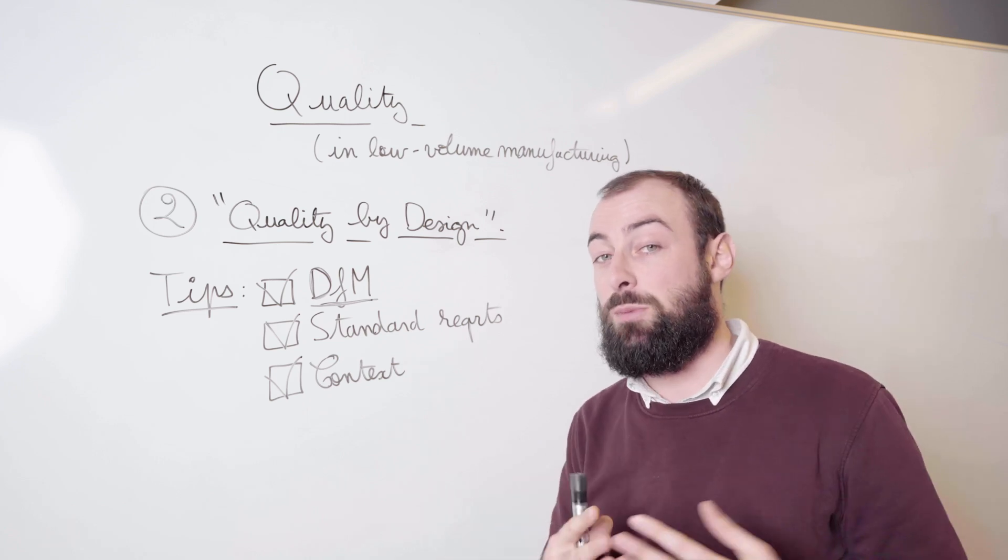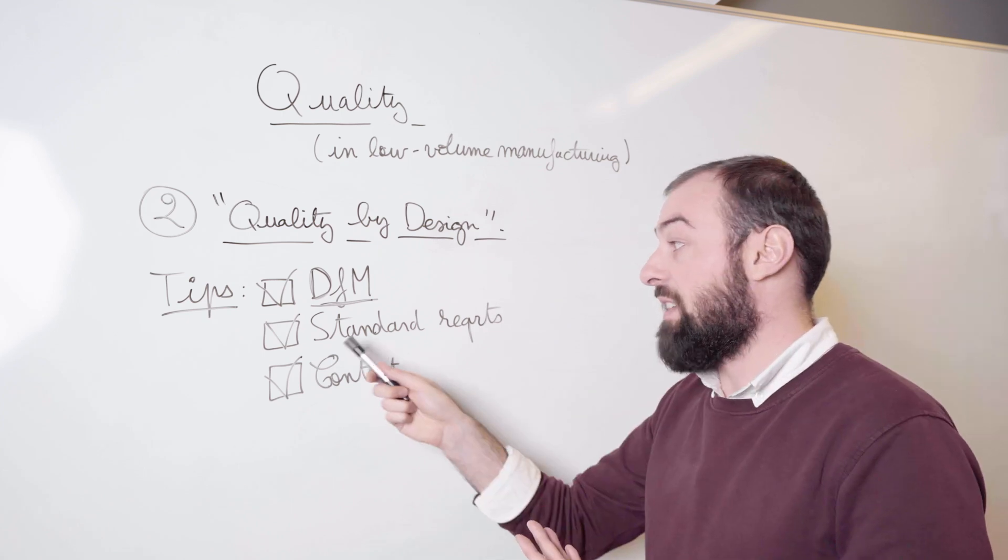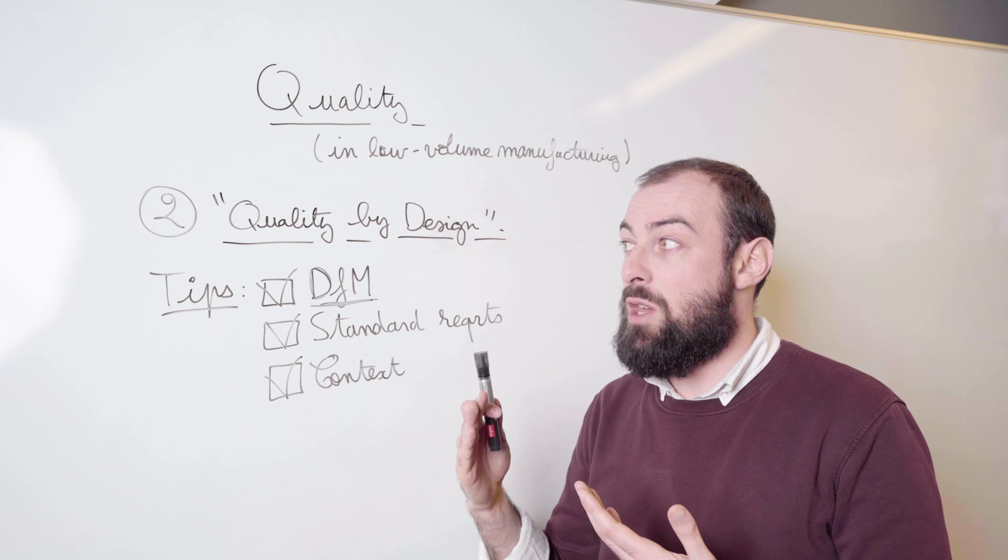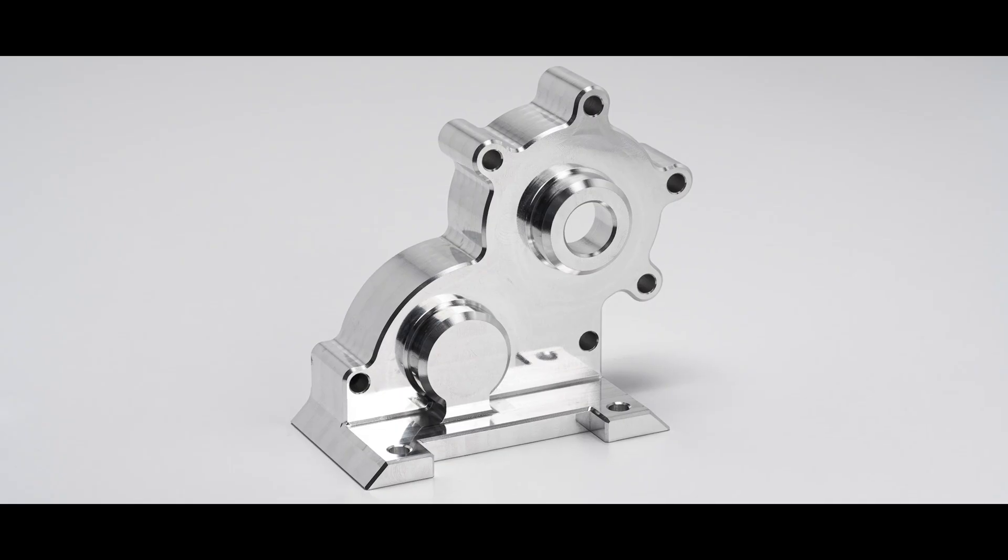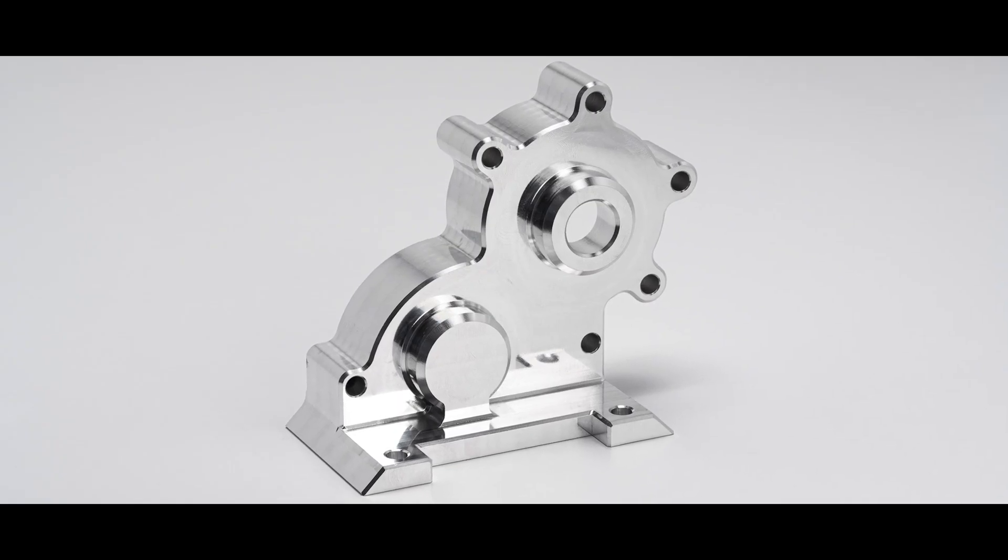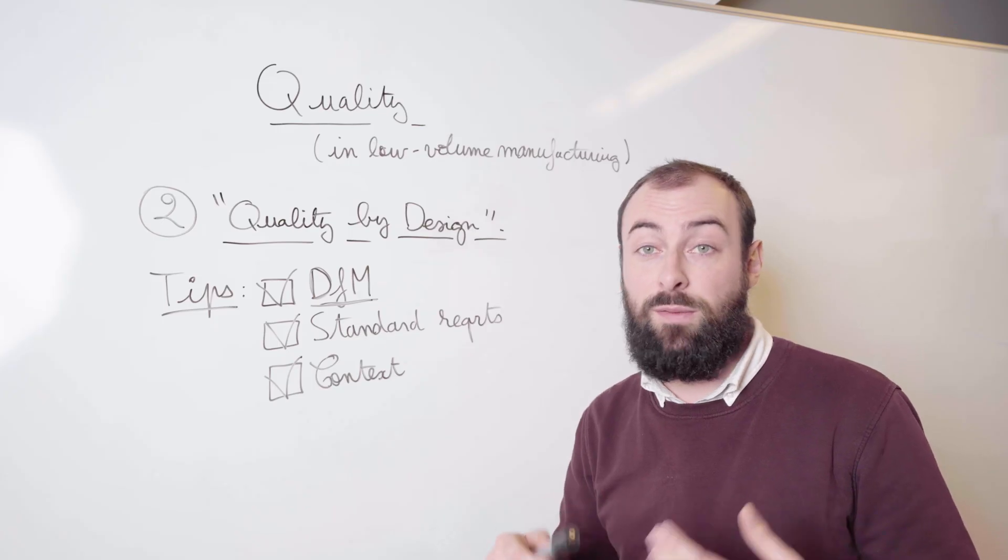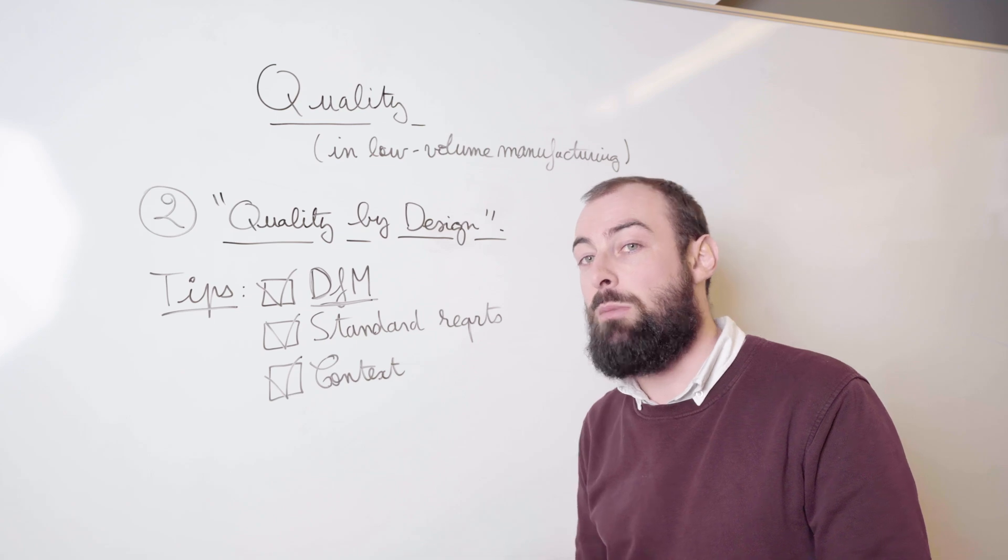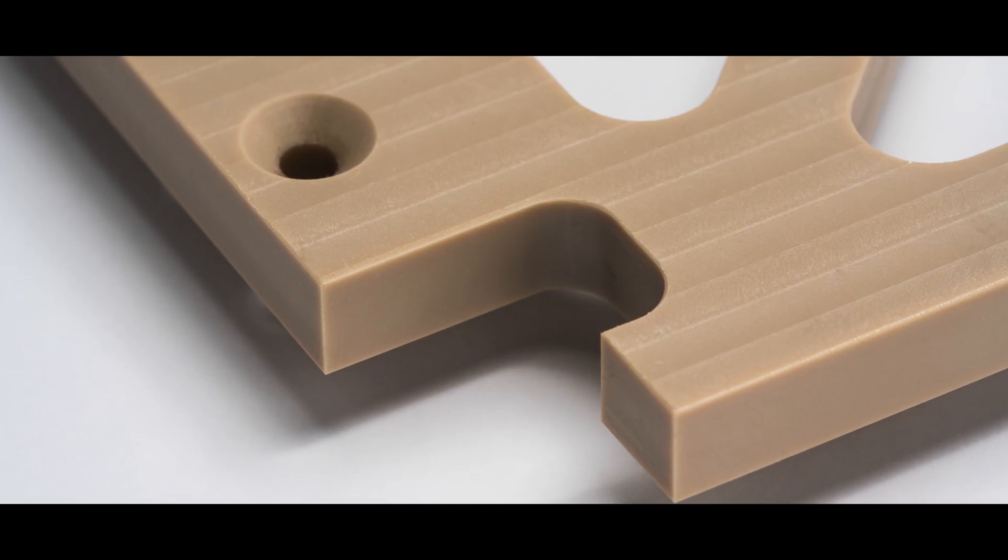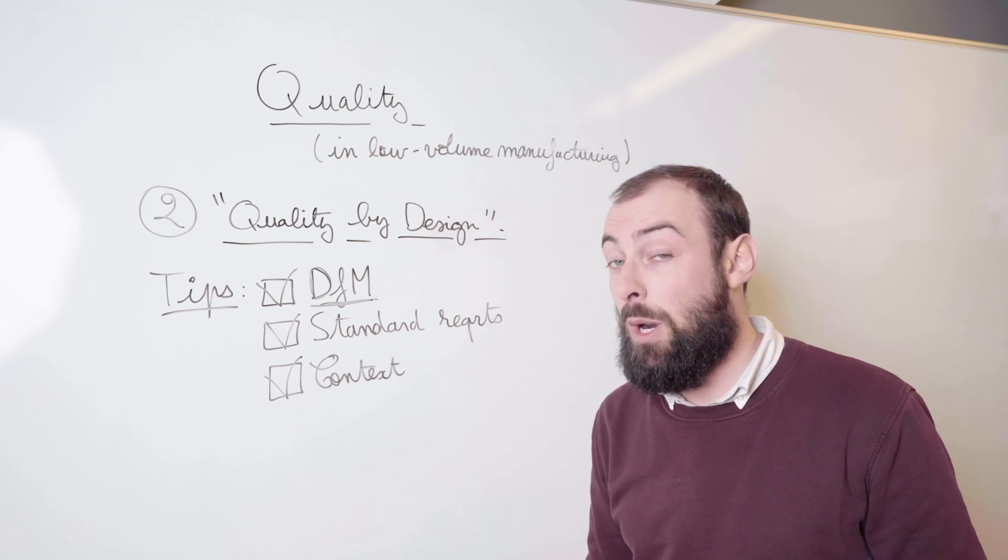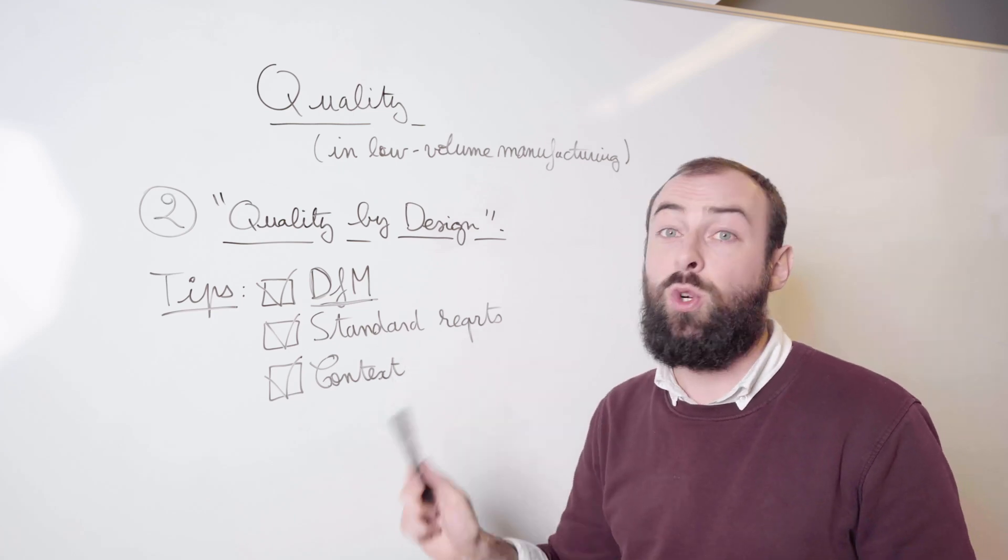The best example of that would be when you have CNC machined parts in aluminum. As-machined is a very consistent and well-defined standard for defining the surface roughness of an aluminum or even a plastic product.